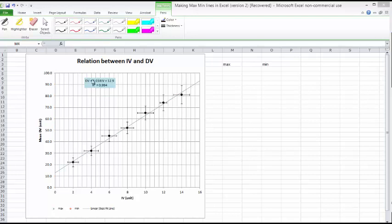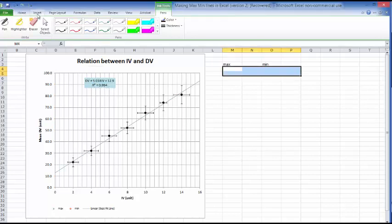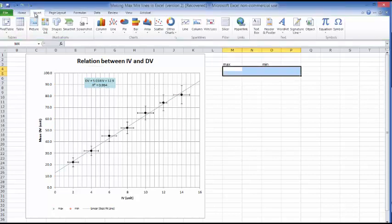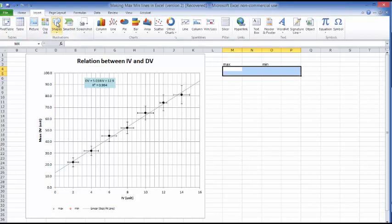So, the first thing that we're going to do is draw the maximum slope line. I'm going to go to the Insert menu here. And under Insert, there's Shapes. And we're going to do a straight line.